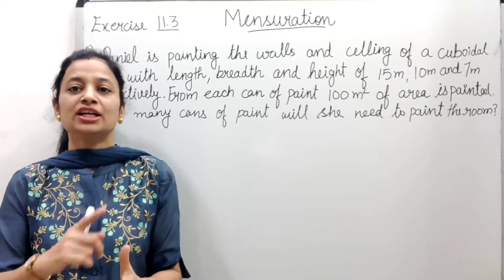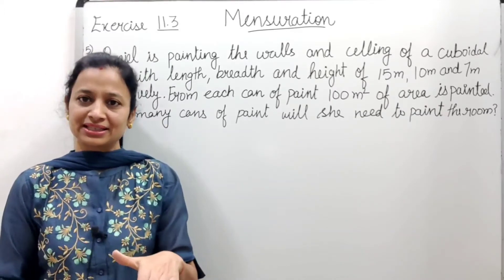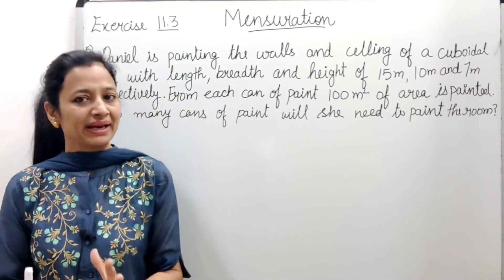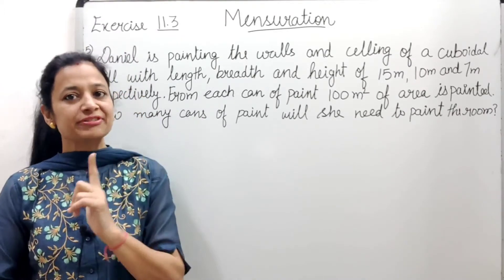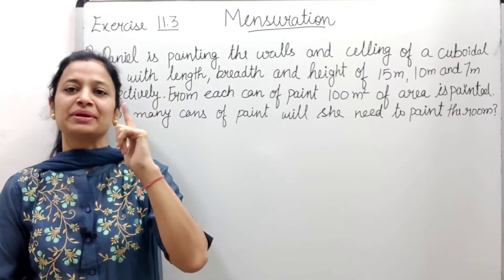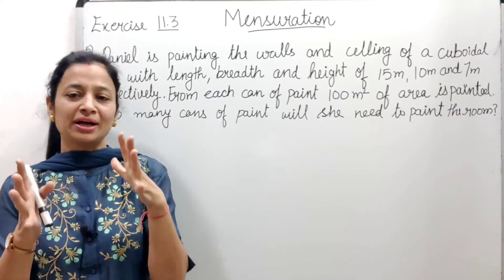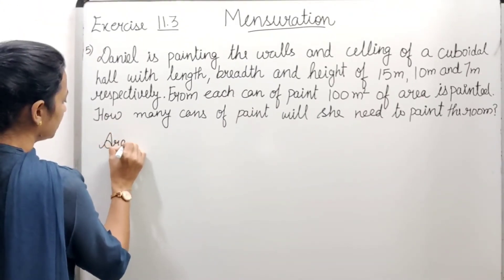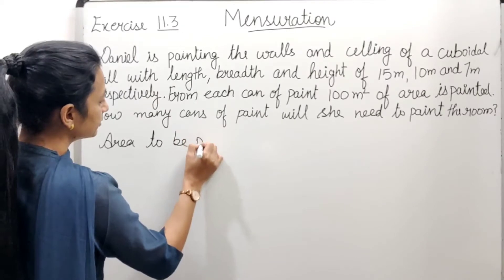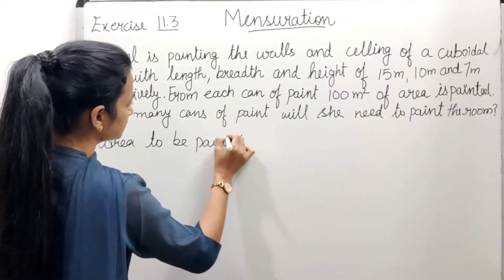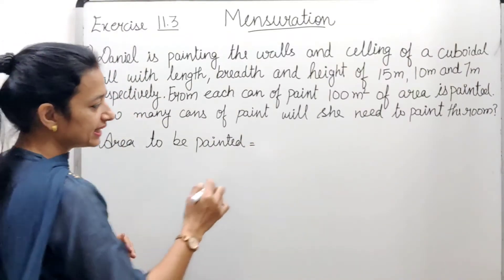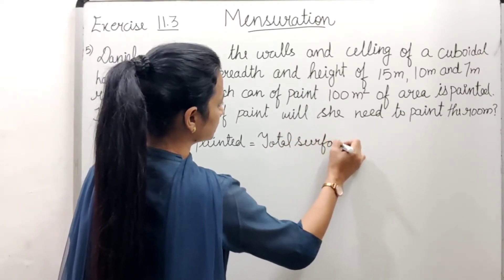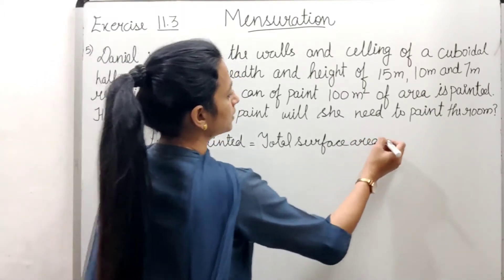How do we do this? We need to find the total surface area and then subtract the floor area to get the walls and ceiling area we need to paint. The second method is the lateral surface area — we find all the required areas and add them, including the ceiling area. So: area to be painted equals total surface area minus floor area.